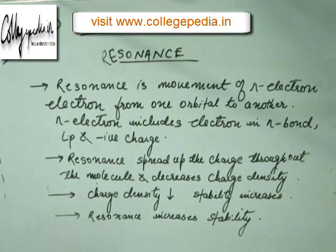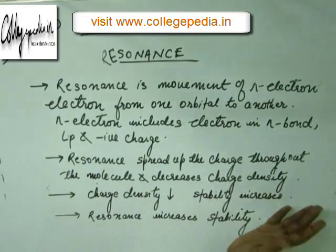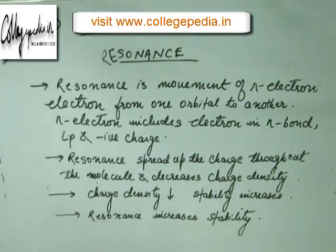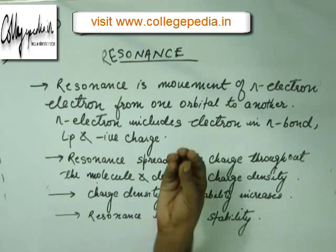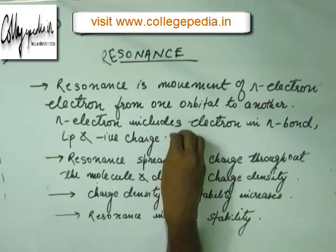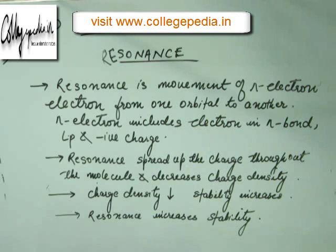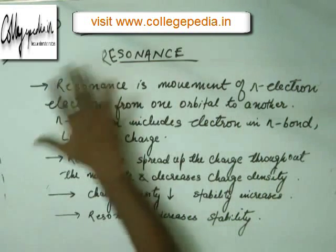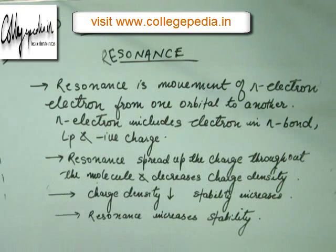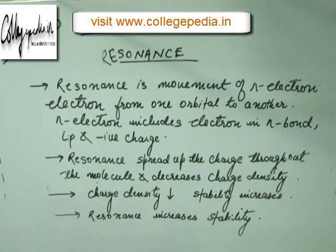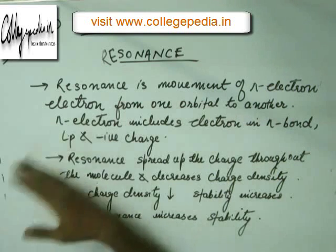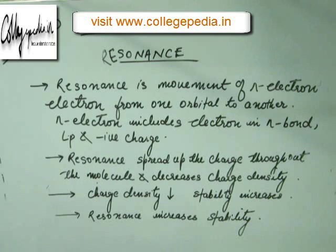Resonance, as we have seen in the last lecture, spreads the charge throughout the molecule and decreases charge density. When a high amount of charge is concentrated in a small area, the charge density increases and that increased charge density brings about instability in the molecule. Charge must be spread throughout the molecule, and when charge density is less you have more stability.